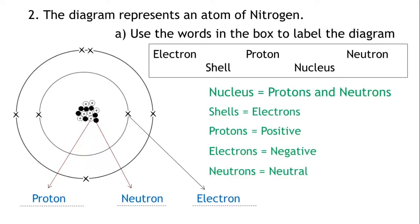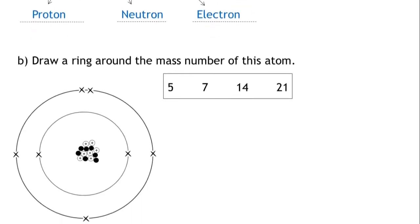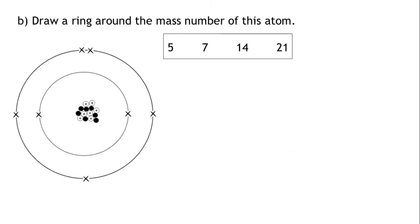Part B. Draw a ring around the mass number of this atom. Let's write down what we know about the mass number.